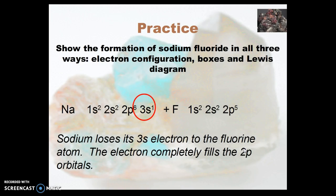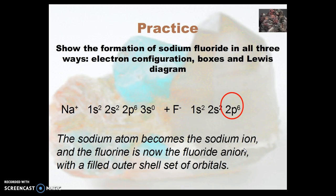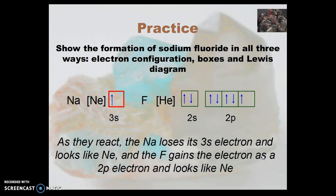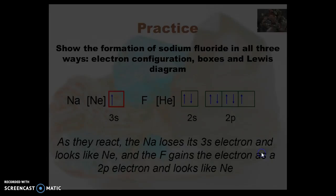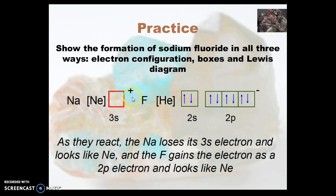Here's the electron configuration. Sodium loses its 3s electron. Now we have 3s⁰ and a plus charge on the sodium, and 2p⁶ and a minus charge on the fluoride. Same thing with the boxes — the 3s is now empty with a plus charge on the sodium ion and the 2p filled.